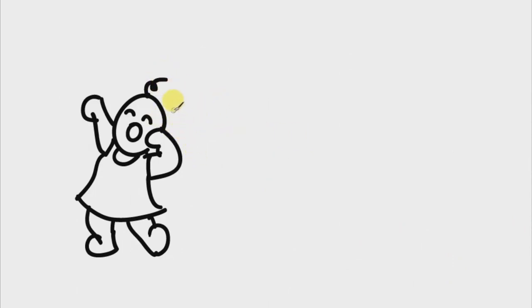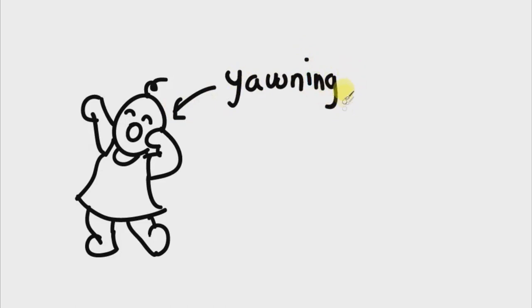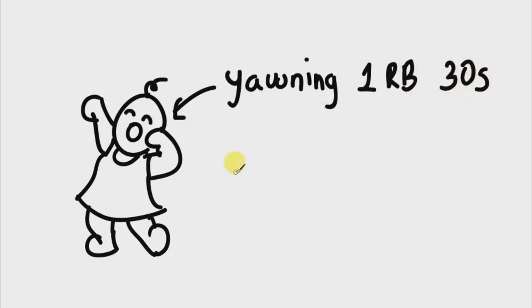A helpful mnemonic is to imagine a baby waking up from sleep and yawning. When it yawns, it opens its mouth and takes a deep breath — that represents the one episode of rhythmic breathing lasting 30 seconds within 30 minutes, which is the B for fetal breathing in the BATMAN mnemonic.